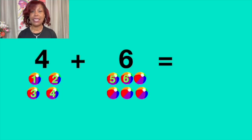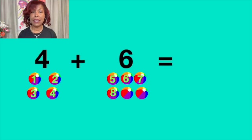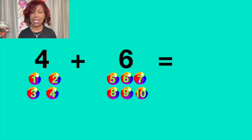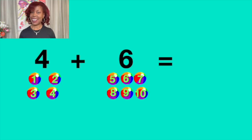Siete, seven, ocho, eight, nueve, nine, diez, ten. Cuatro más seis igual a diez. Four plus six equals to ten. Diez, ten.